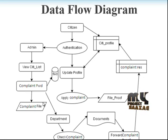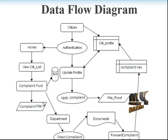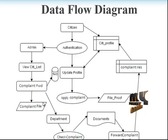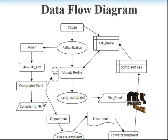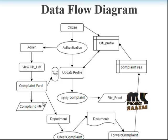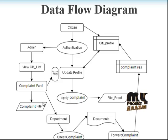Now let me show the flow diagram. There are three roles: citizen, admin, and citizen profile. First, the citizen authenticates and updates their profile. Then complaint registration — the citizen applies a complaint. The admin views the citizen list, forwards complaints to the department. The department checks the complaint, reviews documents, and forwards the resolution back to the citizen.